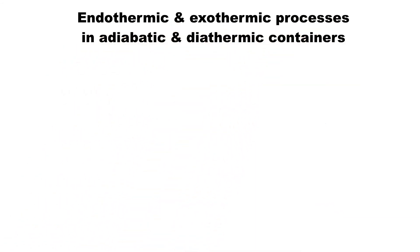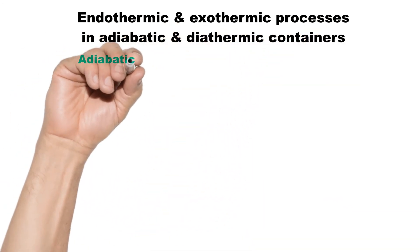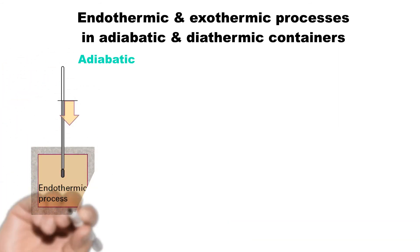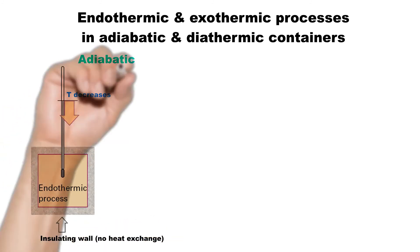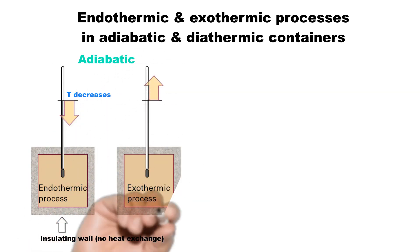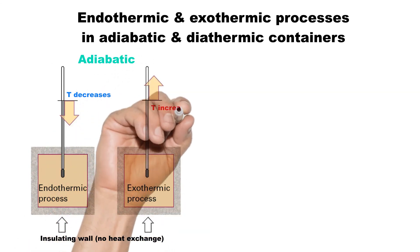Next, let's see what happens when the exo and endothermic reactions occur in adiabatic or diathermic containers. When an endothermic process occurs in an adiabatic system, the temperature falls. If the process is exothermic, then the temperature rises.